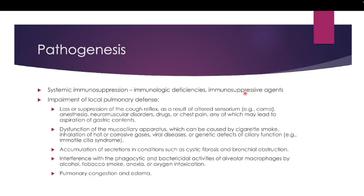Systemic immunosuppression also includes those on immunosuppressive agents — for example, patients with terminal cancer on chemotherapy drugs, and patients with renal disease such as nephrotic syndrome who are on high-dose steroids. These contribute to systemic immunosuppression.